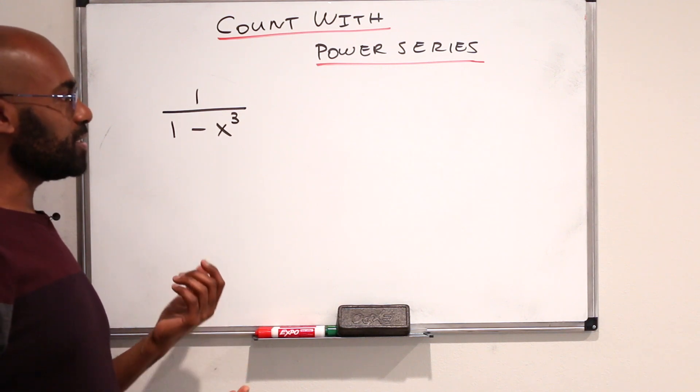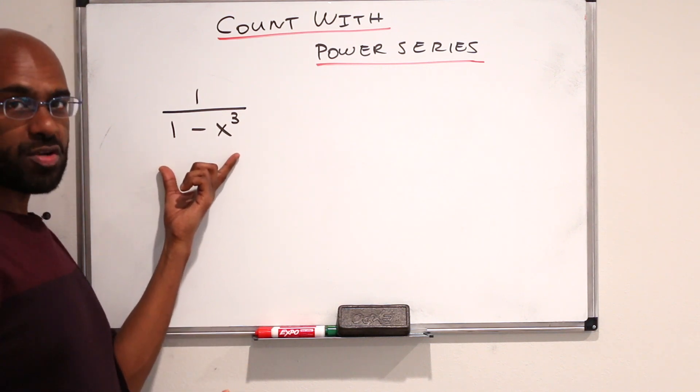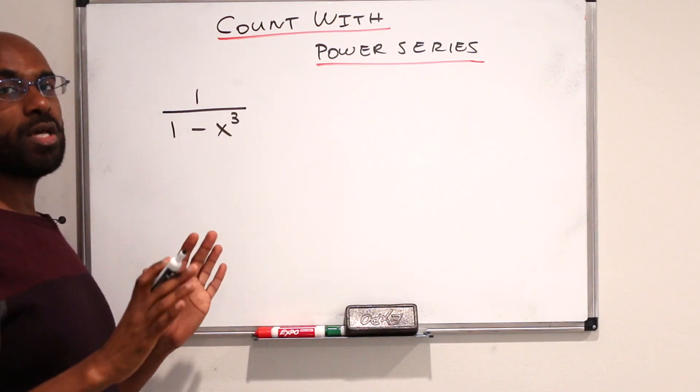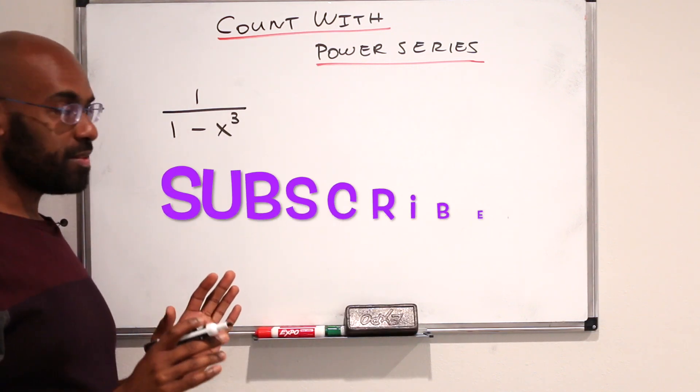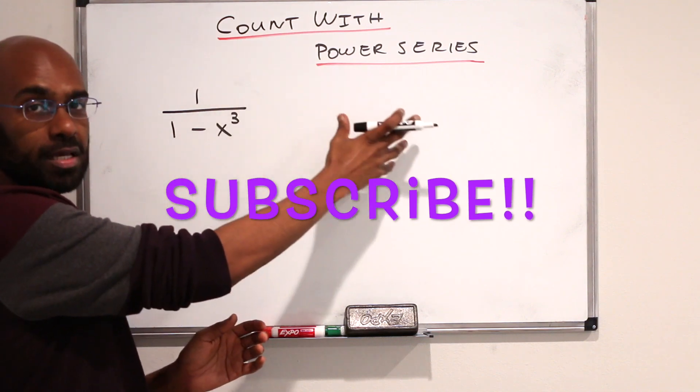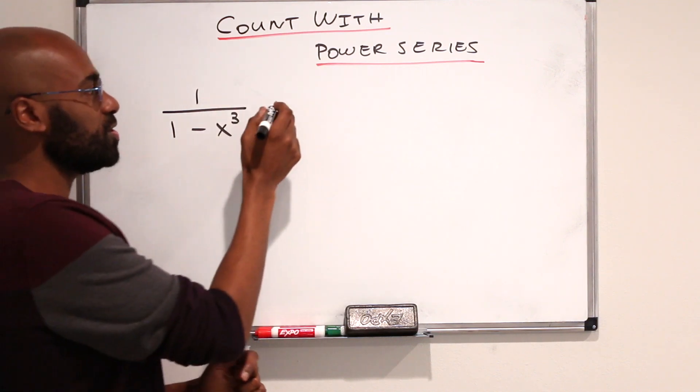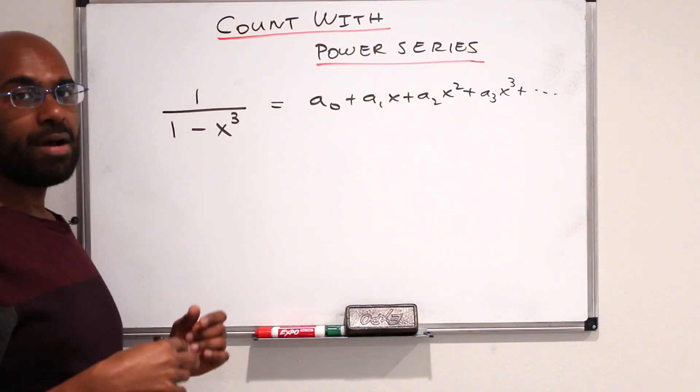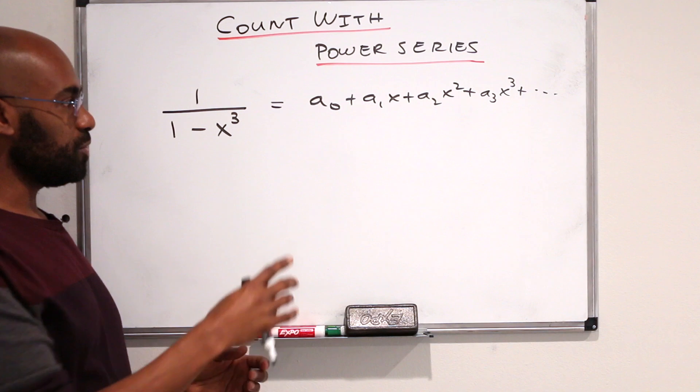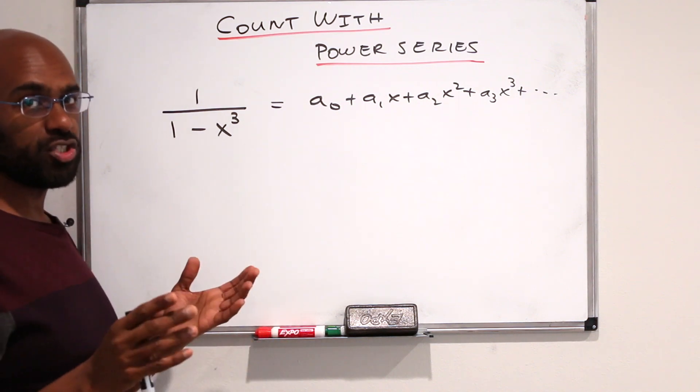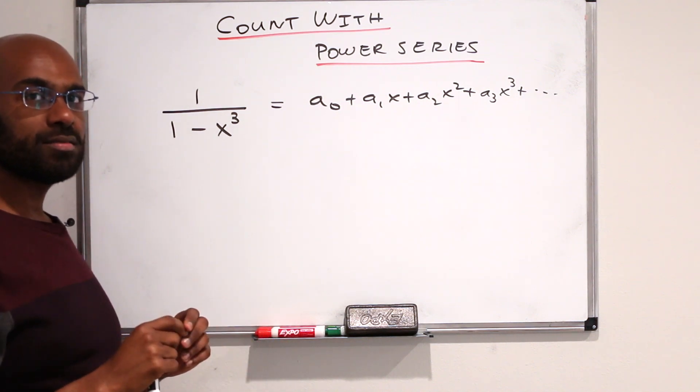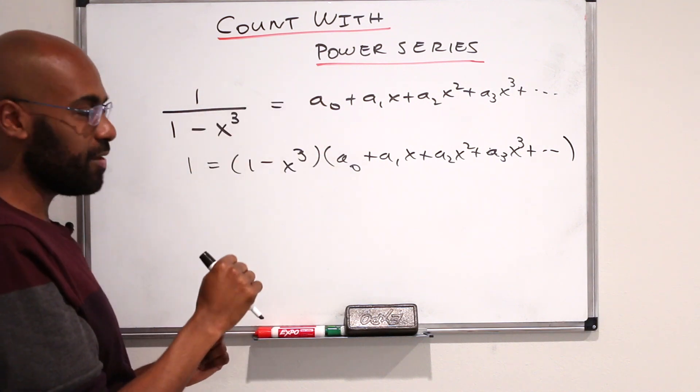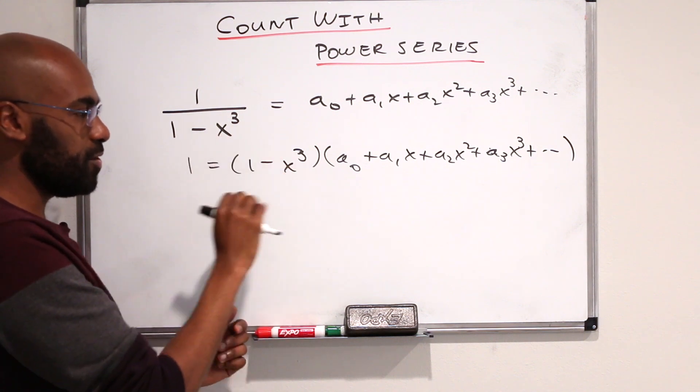The main thing I want to review is the power series expansion of a series like this: 1 over 1 minus x to a power. For the moment I'm going to ignore the radius of convergence. Say we had the power series expansion looking like this. We're going to multiply by the denominator here for values of x where this holds inside the radius of convergence.